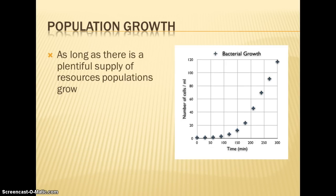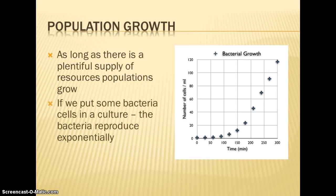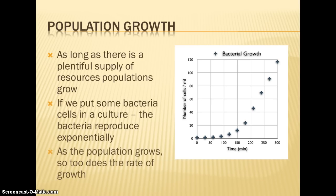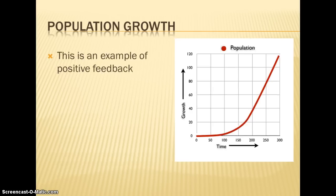As long as there are plenty of resources, populations are going to grow. Looking at this graph with bacteria as an example, notice how the growth starts off slow and then the rate increases the more bacteria is added. This is exponential growth, also known as the J-curve. As the population grows, the rate of growth increases as well.